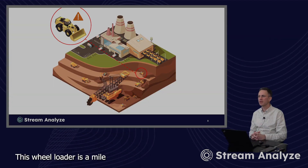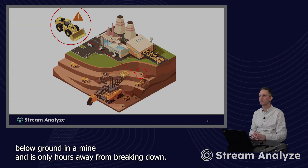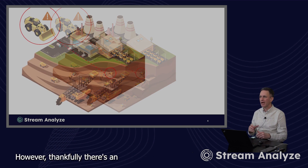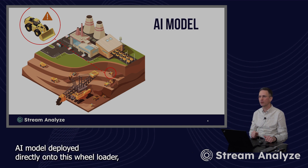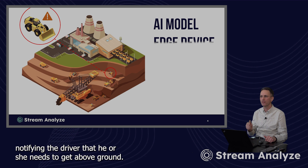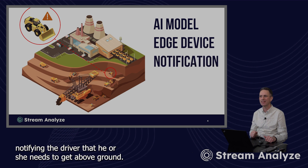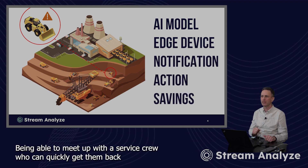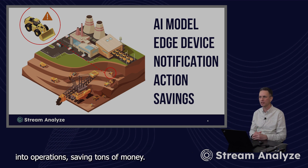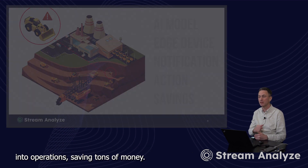This wheel loader is a mile below ground in a mine and is only hours away from breaking down. However, thankfully, there is an AI model deployed directly onto this wheel loader, notifying the driver that he or she needs to get above ground, being able to meet up with a service crew who can quickly get them back into operations, saving tons of money.